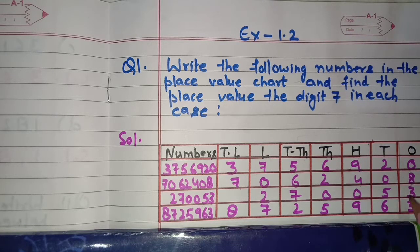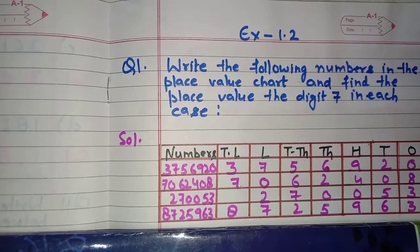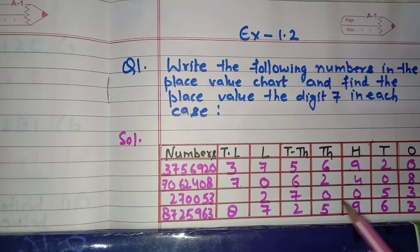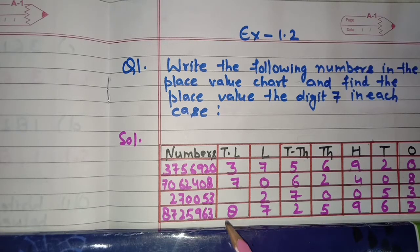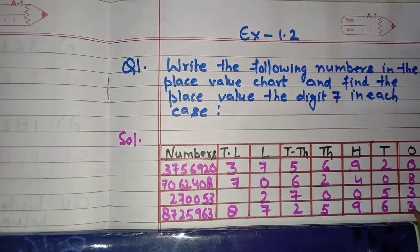The last number is 8,725,963. The last digit is 3, placed at the ones position: 3, 6, 9, 5, 2, 7, 8. The number reads: eighty-seven lakh, twenty-five thousand, nine hundred and sixty-three.